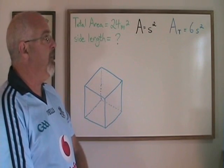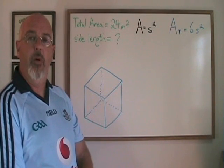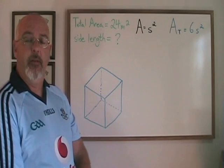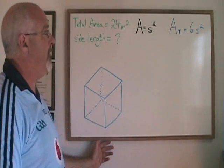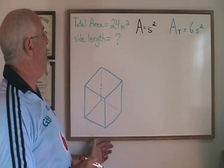The only other way to use this formula is if you know the area and you are looking for the side length. In this case we have a total area of 24 meters squared and we are being asked for the side length.